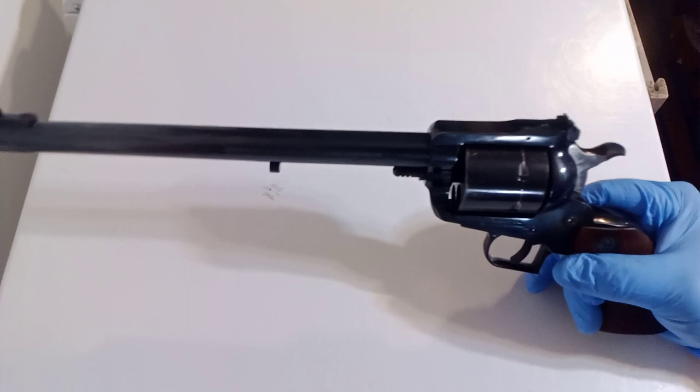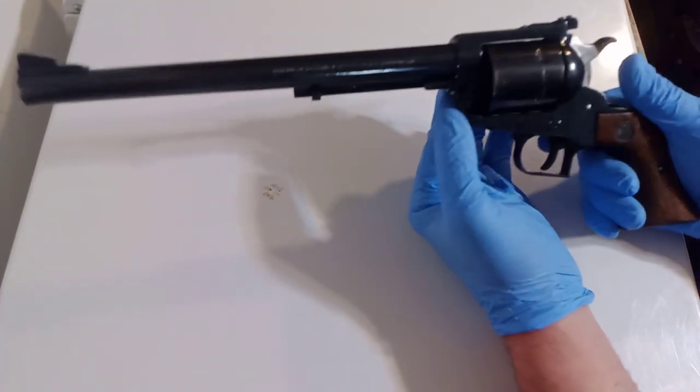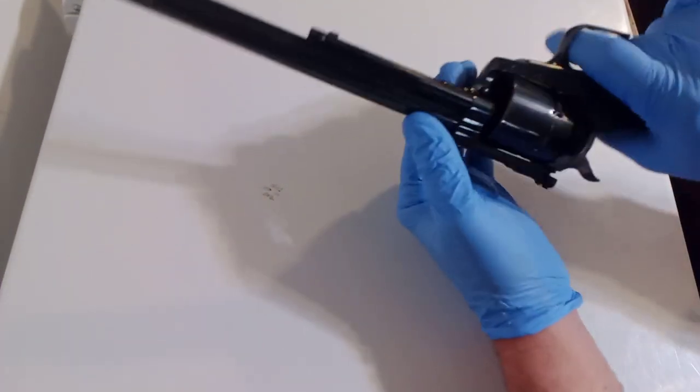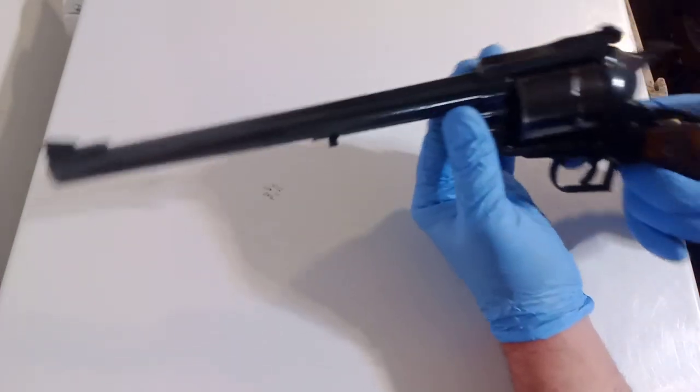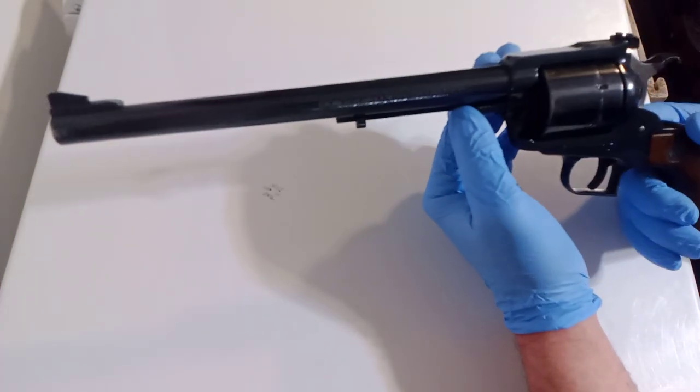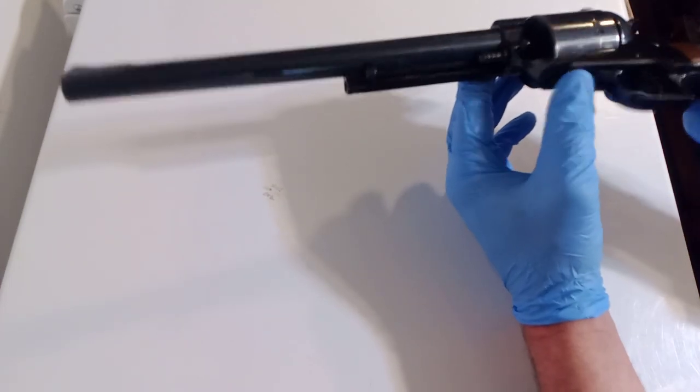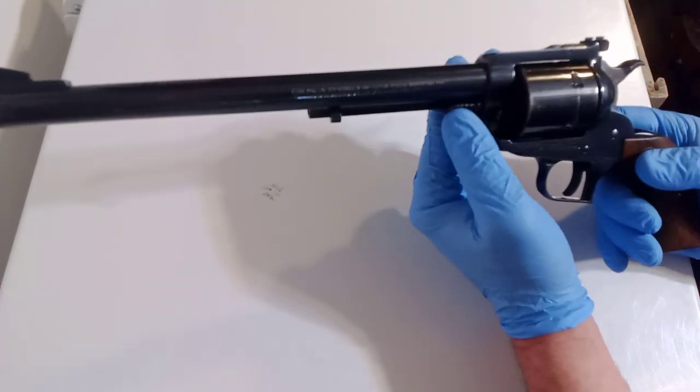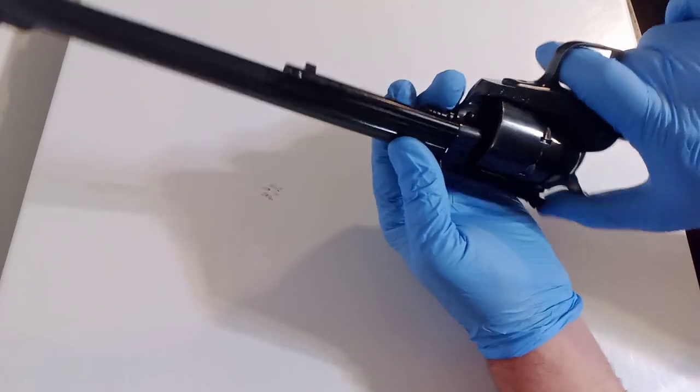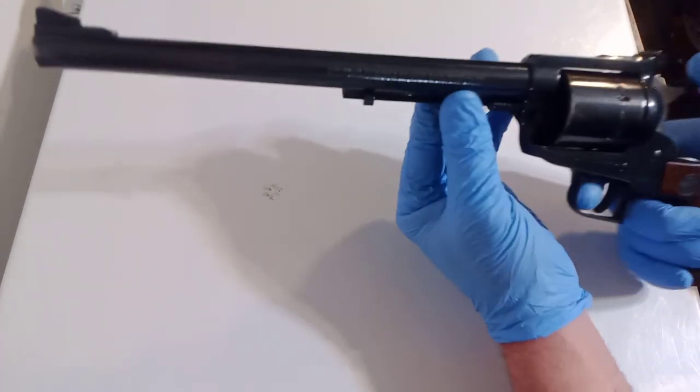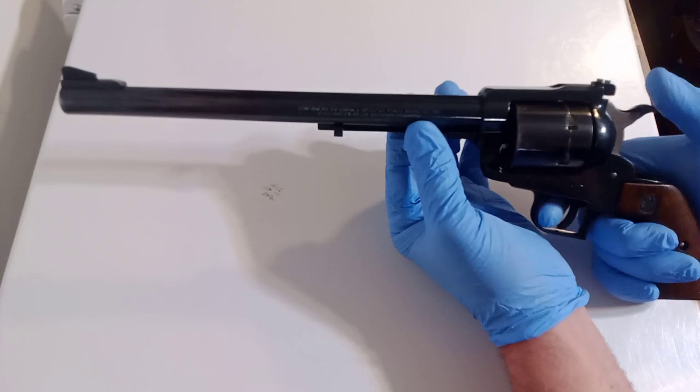This particular Ruger Super Blackhawk was made in 1979, which by no coincidence is the same year that the state of Ohio paid out over $600,000 to the victims of one of the worst mass shootings in U.S. history. You should Google that. And it's also the year that McDonald's introduced the Happy Meal. Kind of ironic.